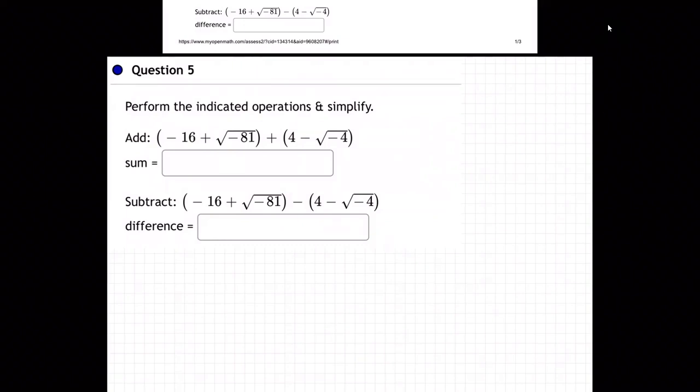I'm going to take this minus 16 plus. Now, what does that negative do inside the square root? It kicks out an i, and then the square root of 81 is 9. In fact, I'm going to put the 9 in the front. You don't have to. Is that good so far? So a negative in a root kicks out an i,